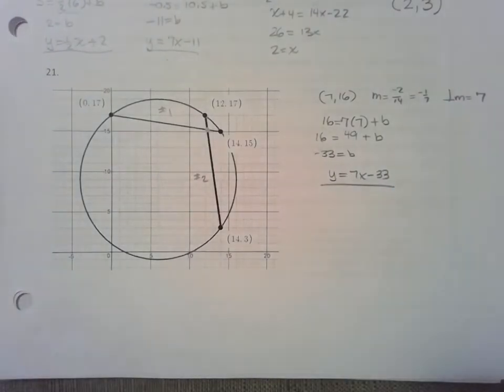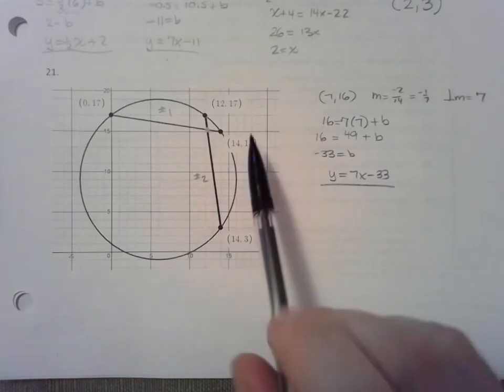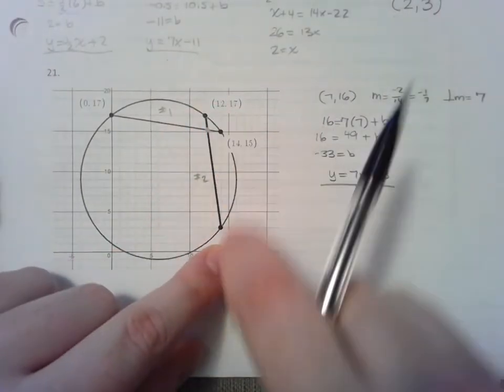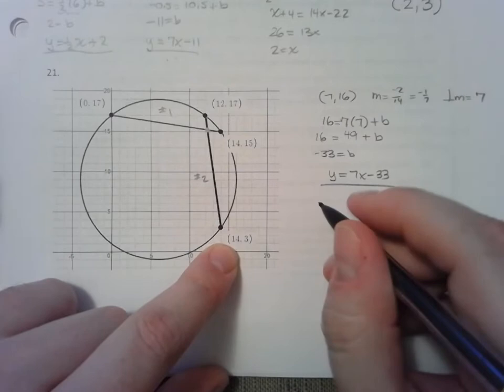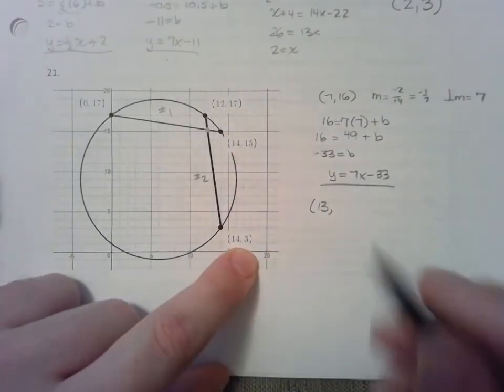Alright, so this is our first equation. Our second equation is the one I wanted to help us with. Let's find the midpoint between (12, 17) and (14, 3). Add together, 26 divided by 2, 13. Add together, 20 divided by 2, 10.